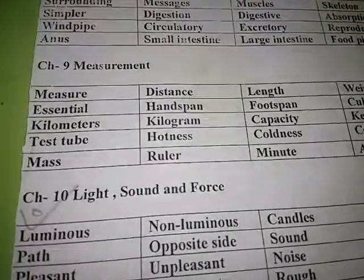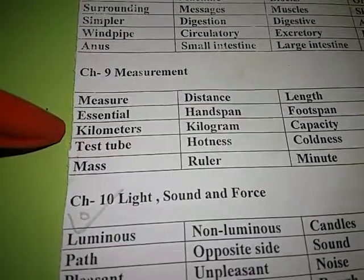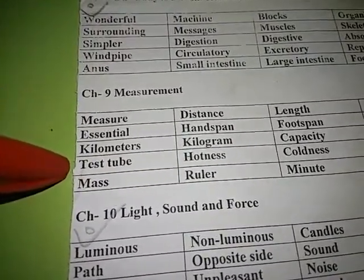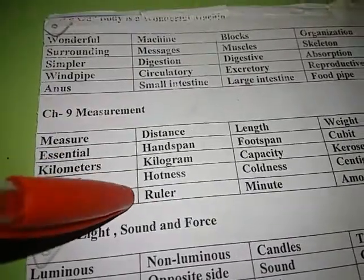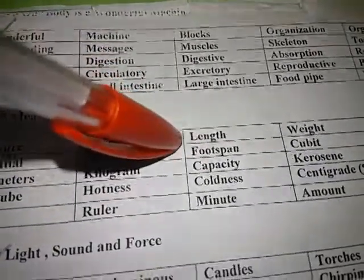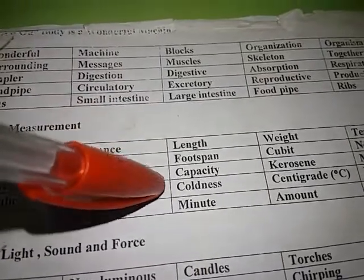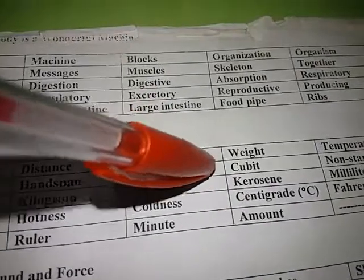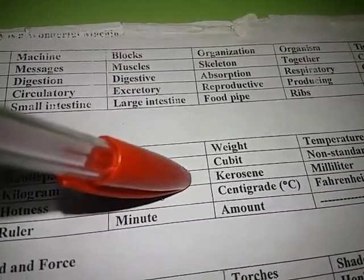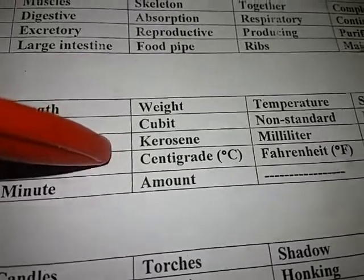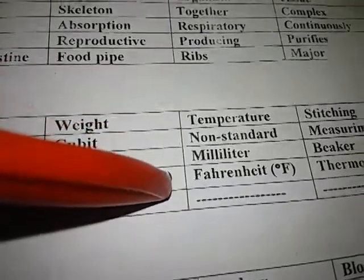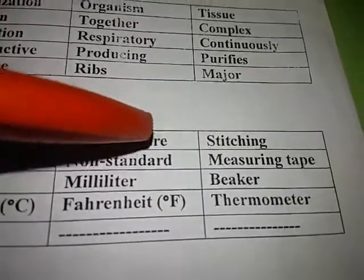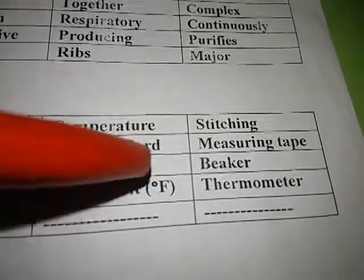There are some more new words: measure, essential, kilometers, test tube, mass, distance, handspan, kilogram, hotness, ruler, length, foot span, capacity, coldness, minute, weight, cubite, kerosene, centigrade, amount, temperature, non-standard, milliliter, Fahrenheit, stitching, measuring tape, beaker.